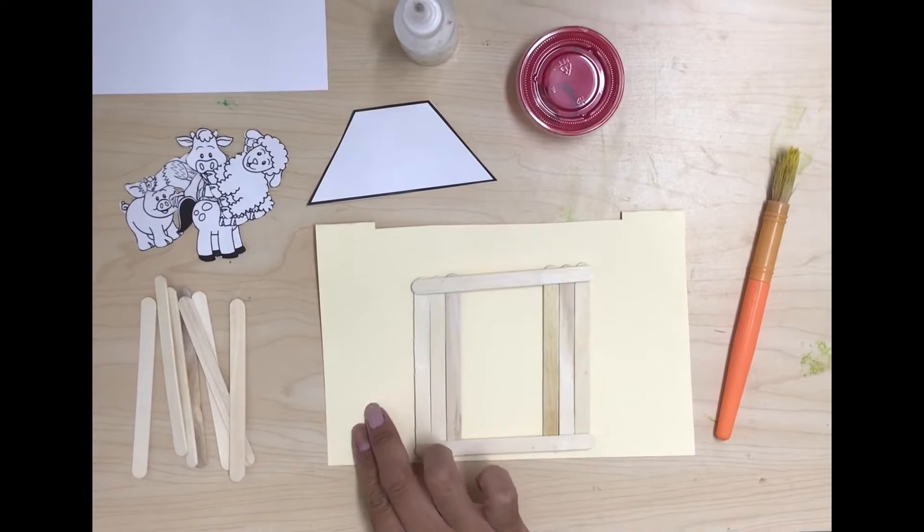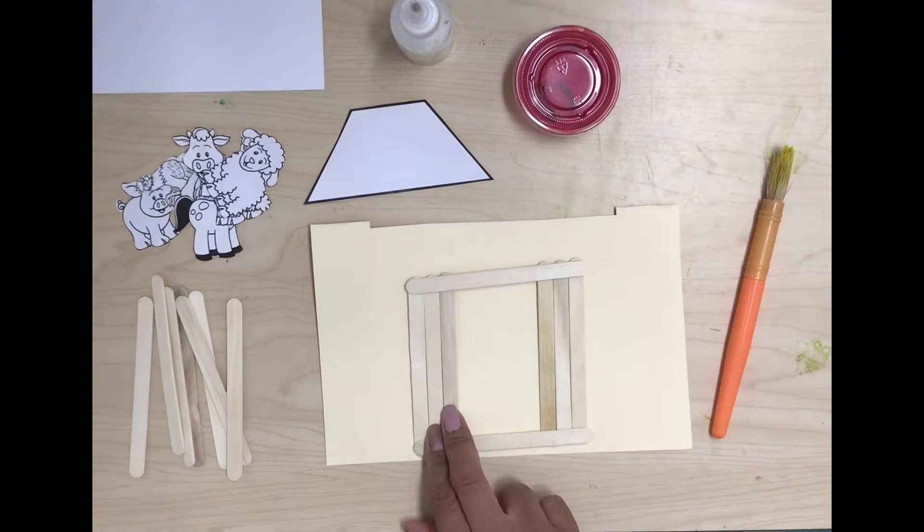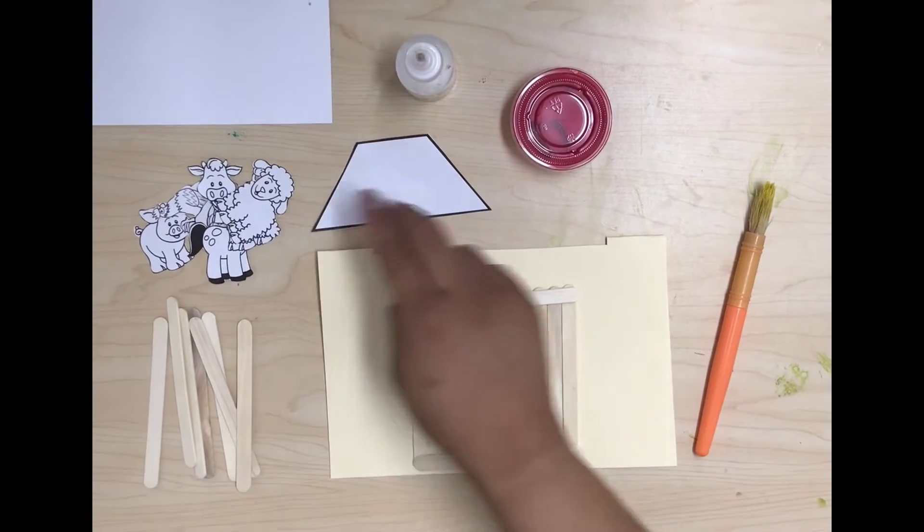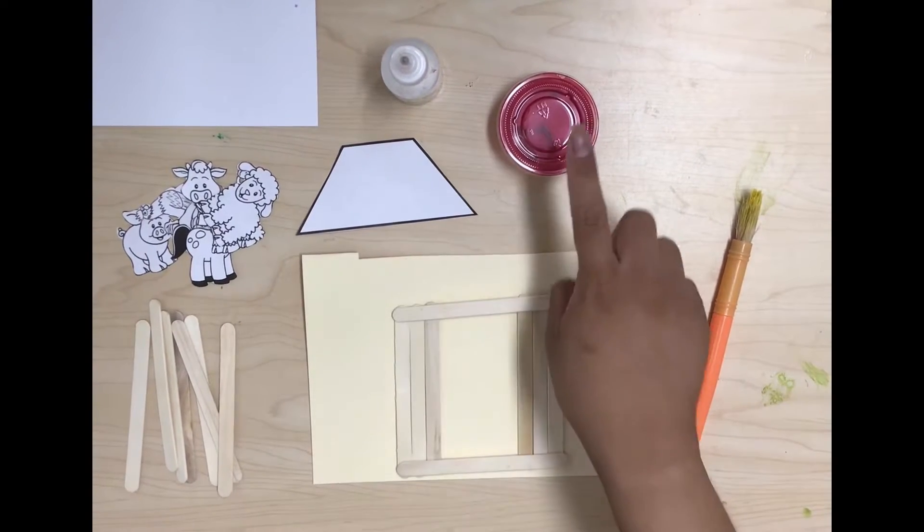Hello I'm Miss Mae and today for art we're going to make farm puppets. For materials today we have construction paper, our pre-made barn, six popsicle sticks, six farm animals, one trapezoid, glue, paint, and a paintbrush.